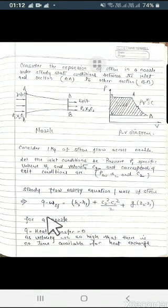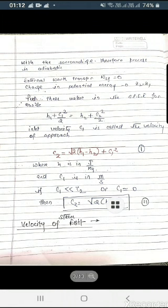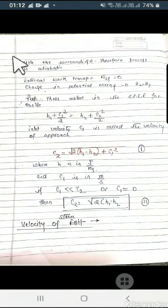Q equals zero as velocity is too high. In nozzle case we have discussed that velocity is greater, so there is no time for heat exchange with the surrounding, therefore process is adiabatic. External work transfer we do not have. W steady flow equals zero. Change in potential energy we put as zero.